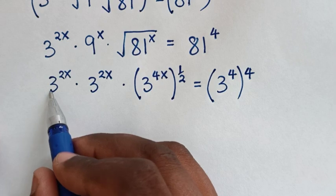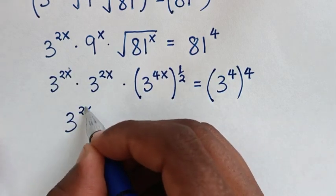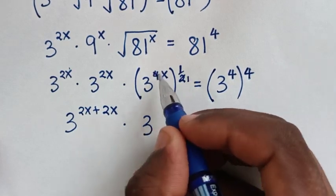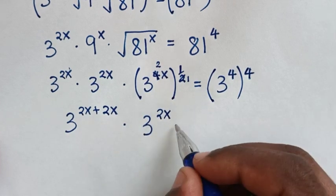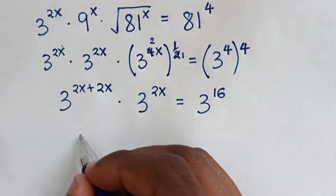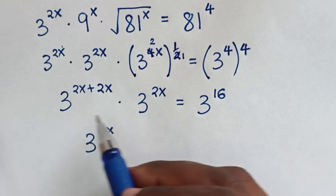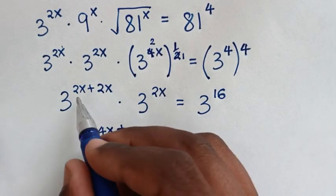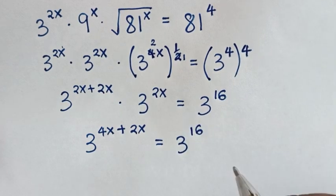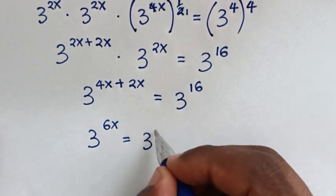In the next step, we multiply exponents with the same base of 3. It will be 3 to the power of 2x, plus 2x. Then, simplifying: 2x plus 2x. Then times this — to simplify, this 2 cancels, so it will be 2x. So 3 to the power of 2x. Then power of 4 times 4 is power of 16. It will be 3 to the power of 4x, plus 2x, which is equal to 3 to the power of 16.